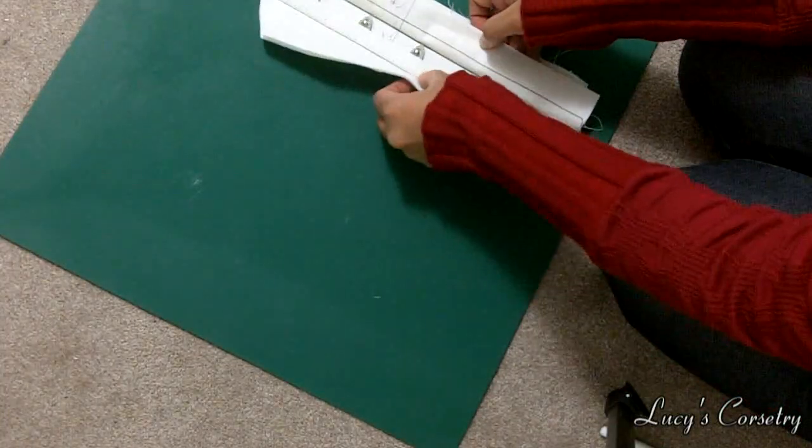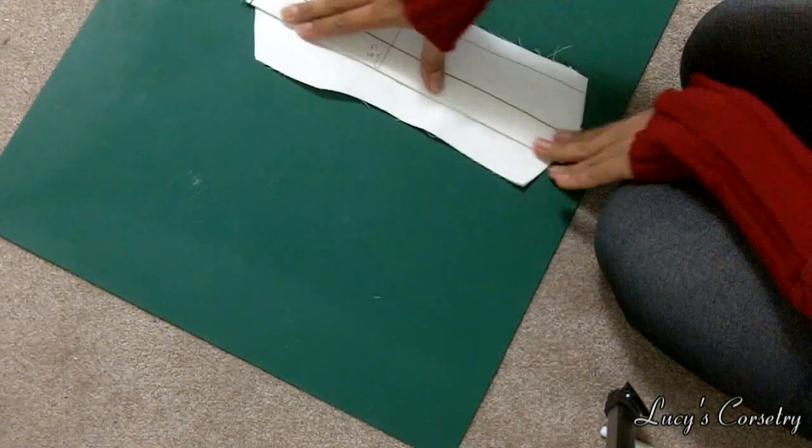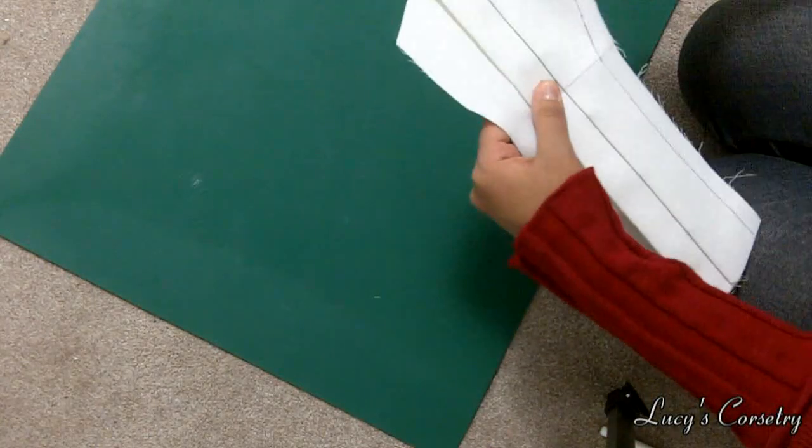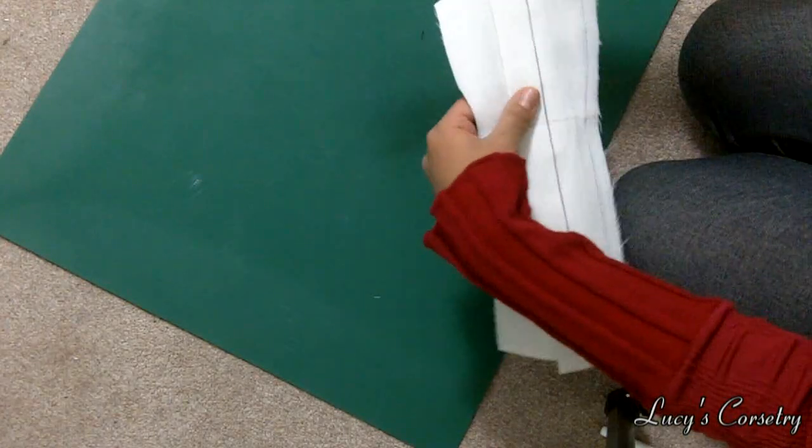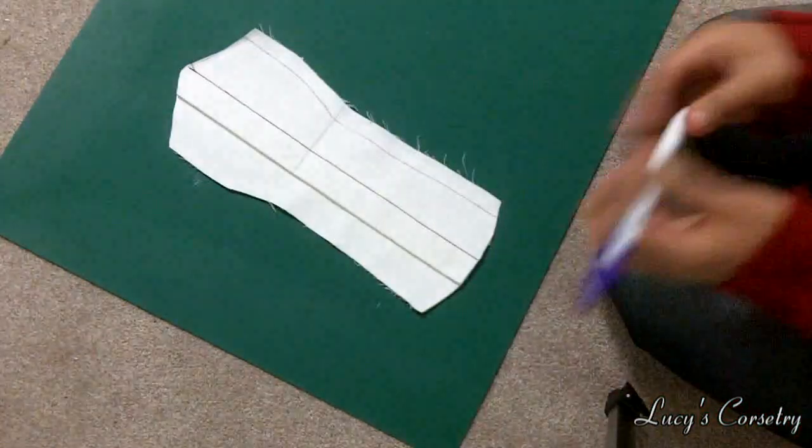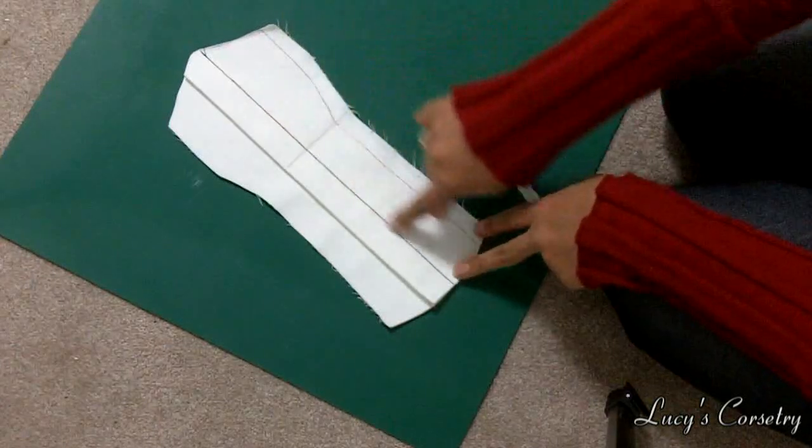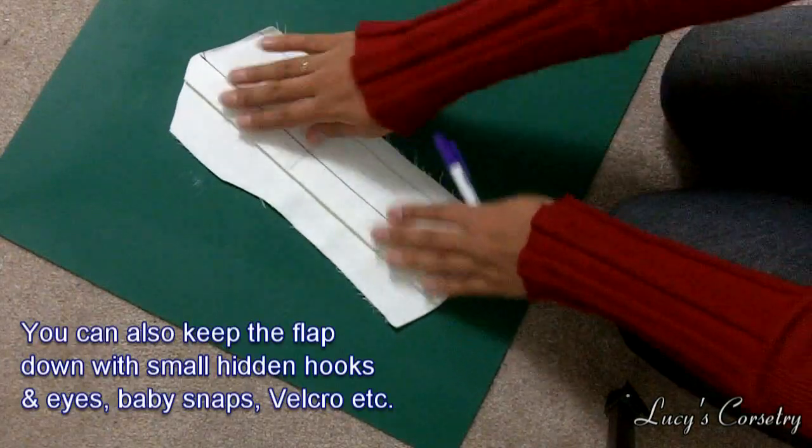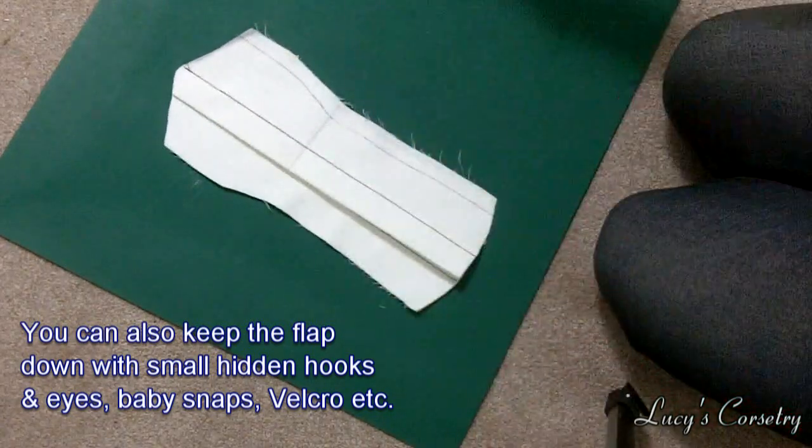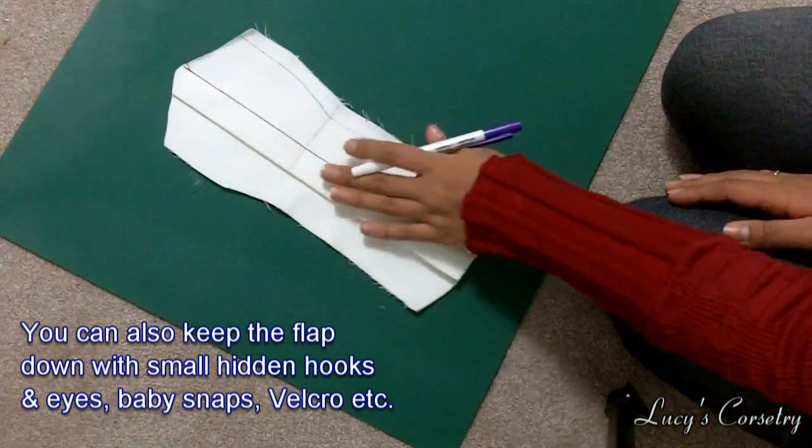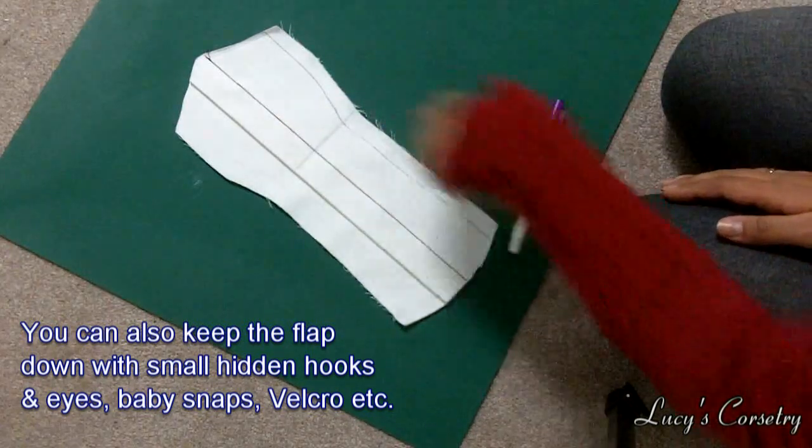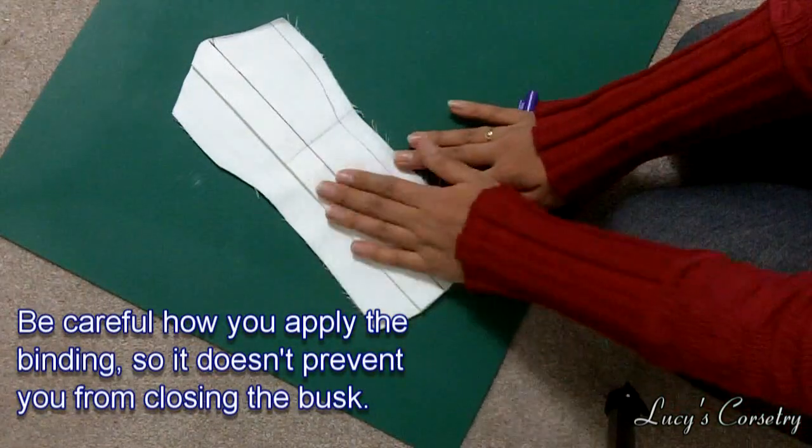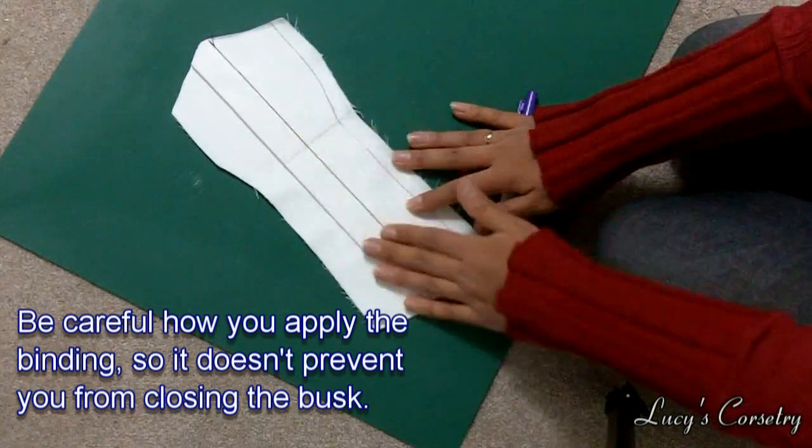And so when you put the two together you can see that this flap just nicely goes over it. And when you are going to be putting your binding on make sure that you trim these areas here. Now you really don't have to put a line of stitching right there. I put it there just to make it more secure and if I wanted to add a bone in there just to keep it flat and keep it from flying up then I had that option. But if you just put binding over the top and bottom edges here then it should be enough just to keep this laying flat pretty much.